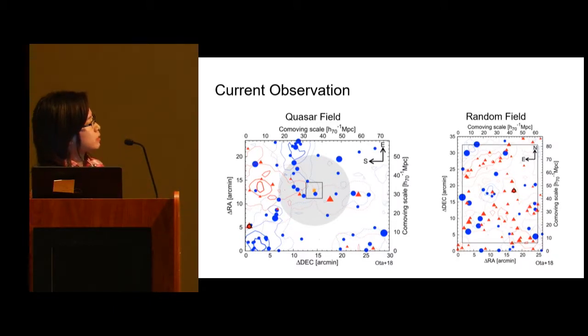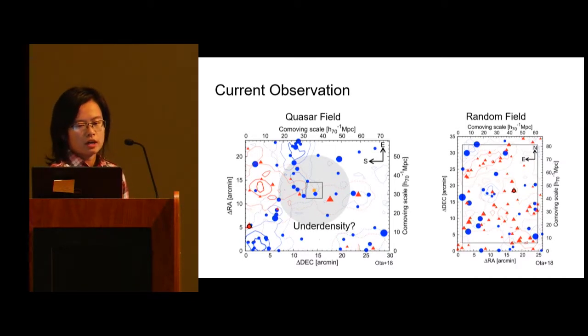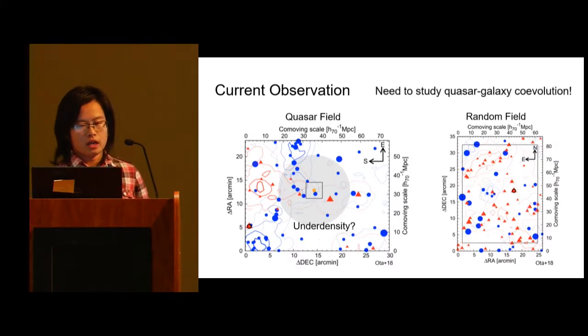This is a very recent observation published last year. The left figure is a quasar field, the right figure is a random field. In the center of the quasar field, the yellow one is the quasar. The blue and red data points are galaxies found by different methods. You can notice there are actually not as many galaxies as in the random field. But we can't immediately conclude the quasar lives in an underdensity because quasar radiation may heat the gas and photo-dissociate the gas in other galaxies. This can suppress the gas from cooling and forming stars.